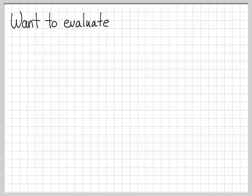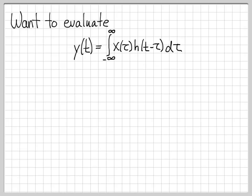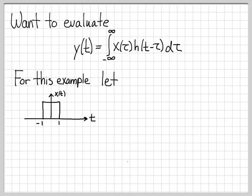We want to evaluate the integral y(t) equals the integral from minus infinity to infinity of x(τ) times h(t minus τ) dτ. For this example, let's work with x(t) as a rectangular pulse function — equal to 1 on the interval from minus 1 to 1, and 0 everywhere else. Let h(t) also be a rectangular pulse, but slightly non-symmetric with a larger width, equal to 1 on the interval from minus 1 to 3.